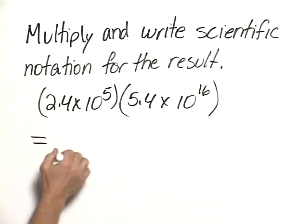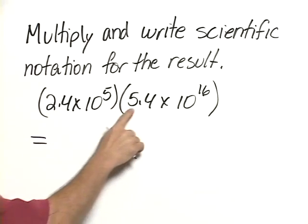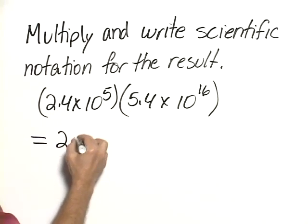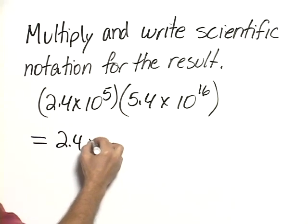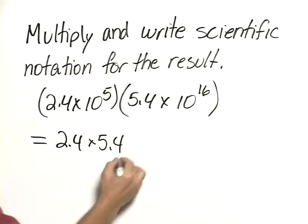So when we multiply two numbers in scientific notation, we multiply the numbers that are between 1 and 10. In other words, 2.4 times 5.4.